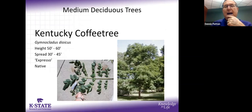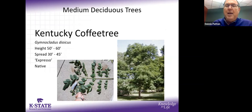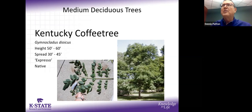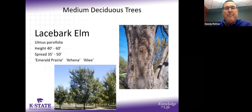Kentucky coffee tree — definitely get the 'Espresso' podless variety, because the species gets its name from settlers making coffee from the beans in those big, thick, fleshy pods. It has a very coarse texture without a lot of branches, so it gives a unique, almost creepy look during winter — probably the last tree to leaf out in spring. But it is a nice durable tree for our area.